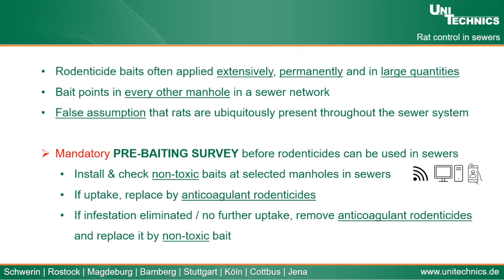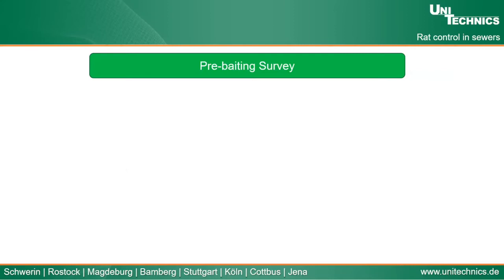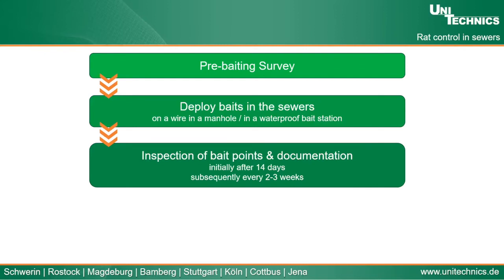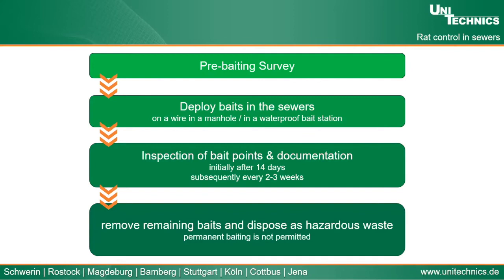At the end of the pre-baiting survey, if the infestation is eliminated or there is no further uptake documented, we remove the anticoagulant rodenticides and replace them with non-toxic ones again. The general procedure for rat control in sewers starts with the pre-baiting survey, then deploying the baits — installed on a wall in the manhole or in a waterproof bait station to ensure anticoagulants won't contact water. Afterwards we inspect the bait points and document uptake, initially after 14 days and subsequently every two to three weeks. At the end, all remaining baits must be removed and disposed of as hazardous waste. By law, permanent baiting is not permitted in sewer systems.